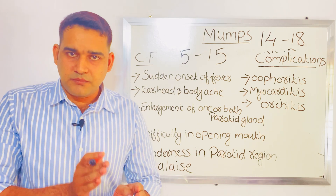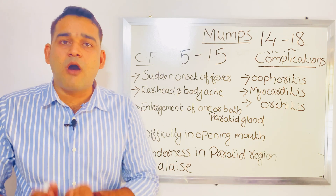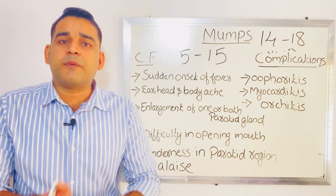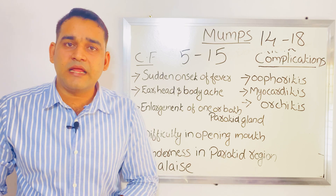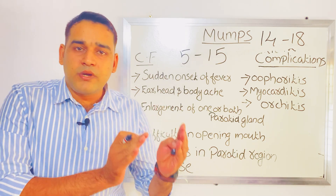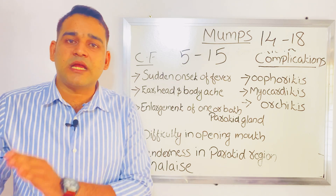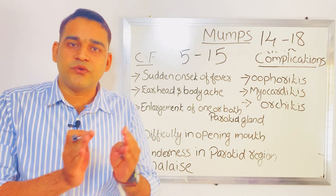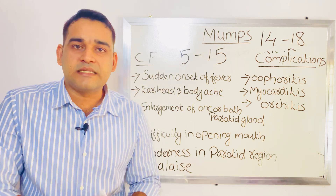Regarding prevention and control — mumps can be prevented through vaccine. We give 0.5 ml live attenuated mumps vaccine after the age of one year, administered either subcutaneously or intramuscularly. A second dose can be given between 4 to 6 years of age.